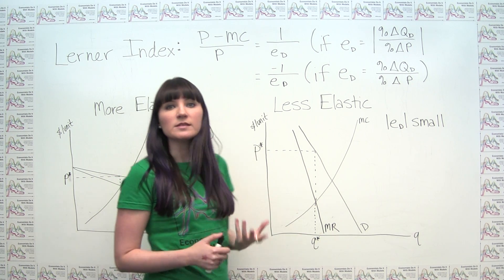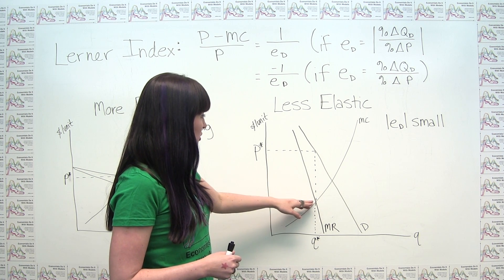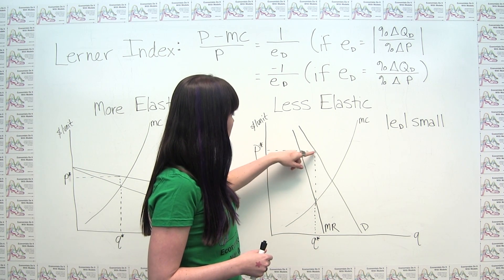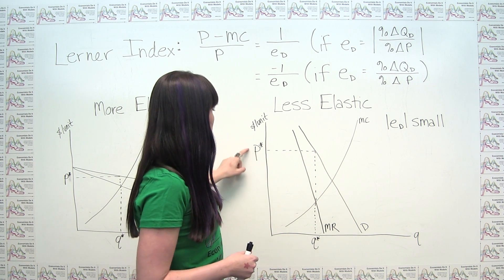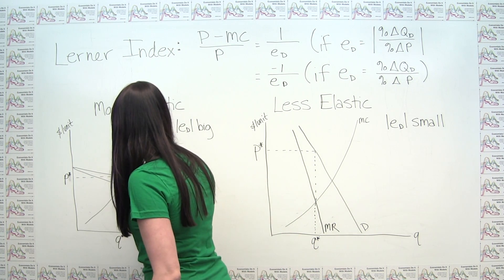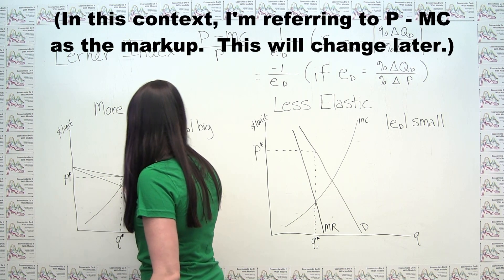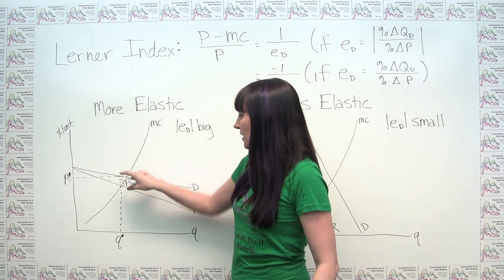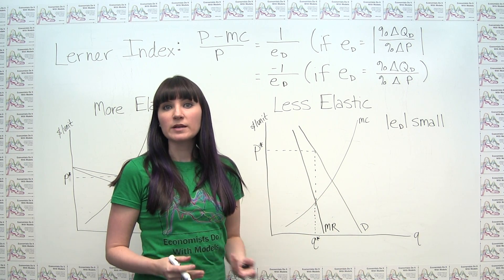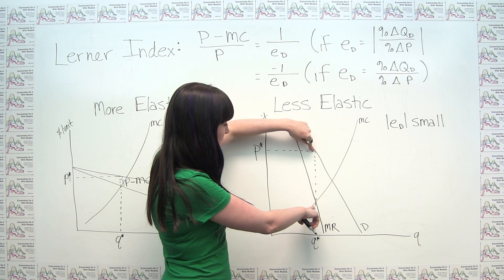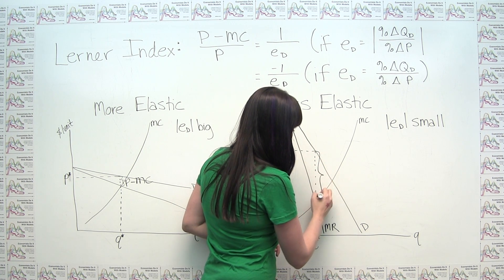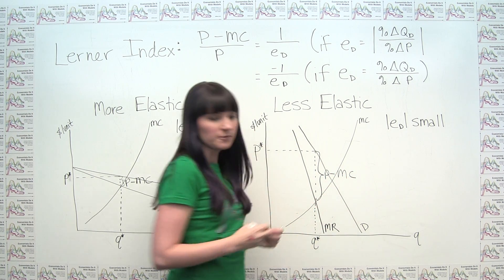Again, in order to set price, the firm's asking the question: how much can I charge such that consumers are still willing to pay for this quantity of output? Well, that's exactly what the demand curve gives. So we go up from this quantity on the demand curve to find our optimal price, P star. Now compare the markup to the elastic case, where we said price minus marginal cost was pretty small — just a few finger widths apart. Here, if we were to look at price minus marginal cost, we have a price that's all the way up here and a marginal cost of production that's all the way down here. So here, the difference between price and marginal cost is very big.